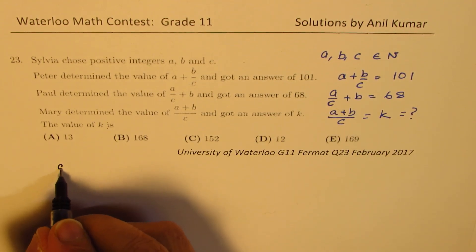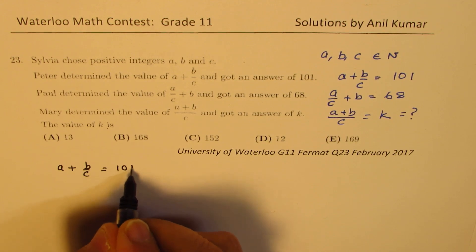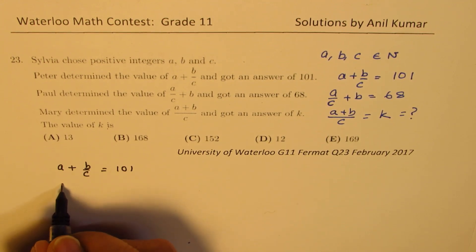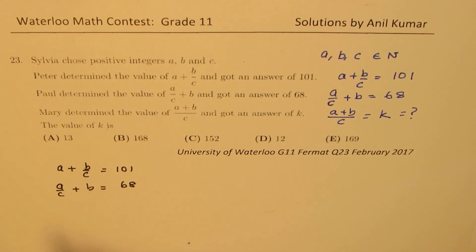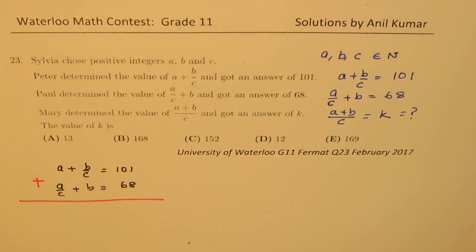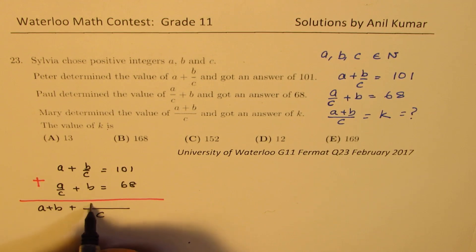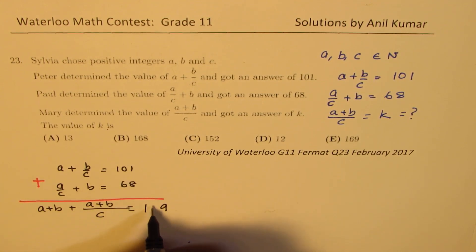Let's see how to work on such questions. We have A plus B over C equals to 101, and we have A over C plus B as 68. So I will just add them. If I add them, what do I get? We get A plus B and we also get these where C is common.